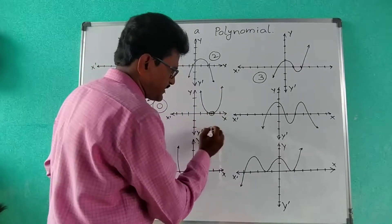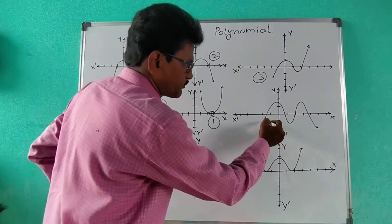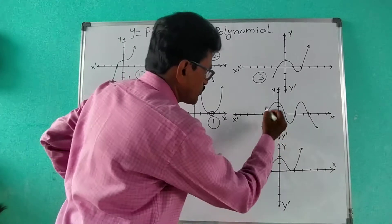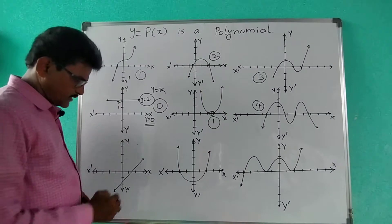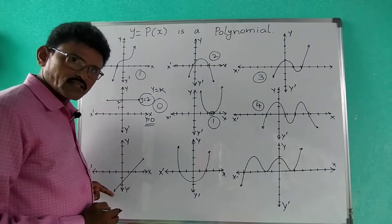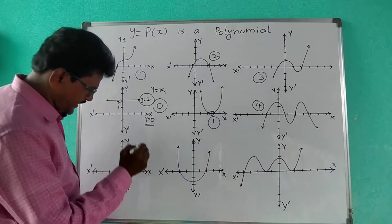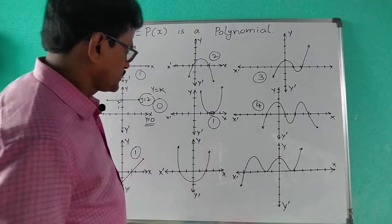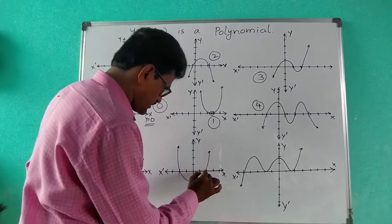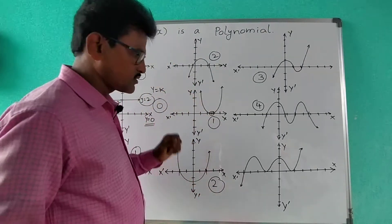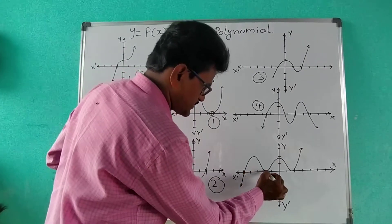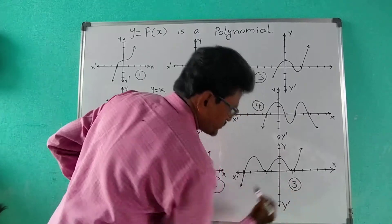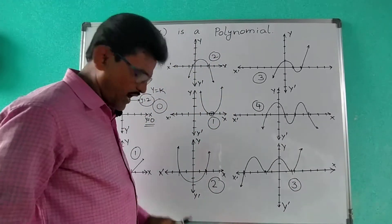Here this curve is touching one, two, three, four places — the graph is cutting the x-axis at four places — so the number of zeros is four. Now here it's a linear graph, a straight line, which means a linear polynomial. It touches at only one place, so the number of zeros is one. This parabola is cutting at two different places, so the number of zeros is two. And this curve is cutting at first, second, third places — touching the x-axis at three different places — so the number of zeros is three.